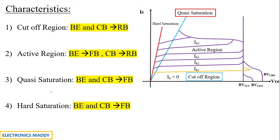Now, what is quasi saturation? Saturation is achieved when both the base-emitter junction and the collector-base junction are forward biased — this applies to both quasi and hard saturation. Quasi saturation is the region between hard saturation and active region. When the value of IB is increased beyond a certain point in a power BJT, instead of going directly into normal saturation, the collector current increases linearly in a rapid fashion — this corresponding mode is called quasi saturation. It exists because of the lightly doped N− collector drift layer in the structure.